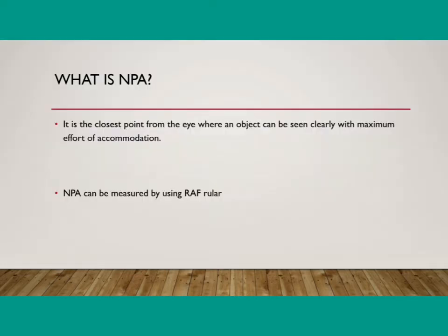Now what is NPA? NPA, or Near Point of Accommodation, is the closest or nearest point from the eyes where both eyes can see an object clearly with maximum effort of accommodation. That is known as Near Point of Accommodation. So NPC involves maximum convergence to see an object clearly, while in NPA there is maximum effort of accommodation to see an object clearly.